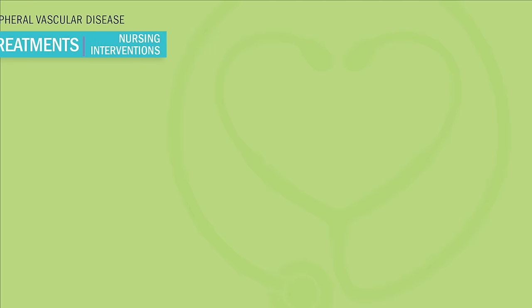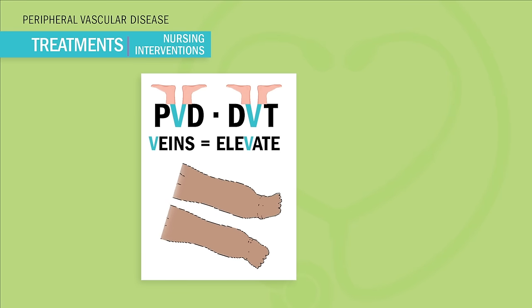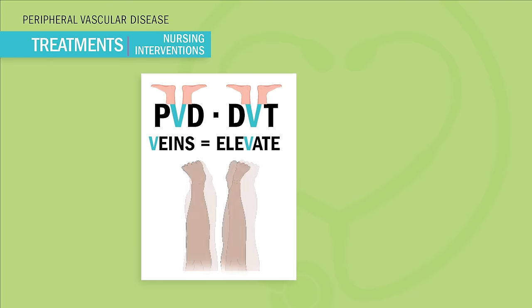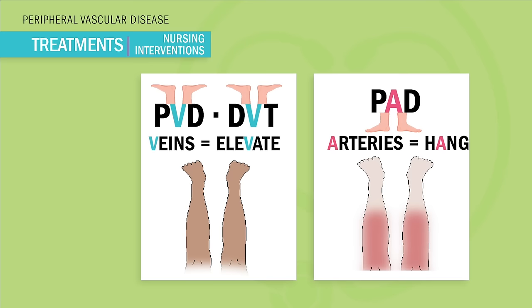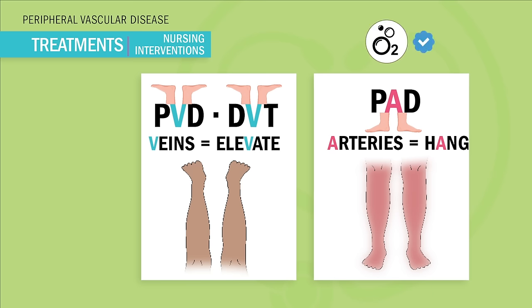I can almost guarantee this next part is gonna be on your exam. PVD — we elevate the legs. V is for elevate, all vein problems. Remember, elevating helps to vacuum all that fluid back up to the heart. So elevate PVD and even DVT. Now PAD — remember, put arteries down. Hang the leg over the bed. The pain should stop and the color should return because oxygen is flowing down and away. Arteries pump oxygen away, and it's always harder to pump oxygen uphill — that's why we hang that leg.